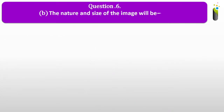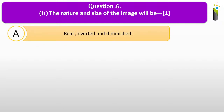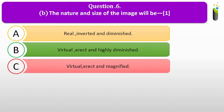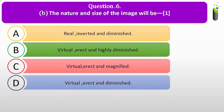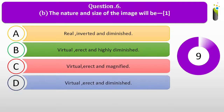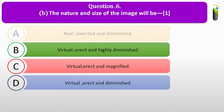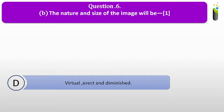Question number six B. The nature and size of the image will be dash. A, real, inverted and diminished. B, virtual, erect and highly diminished. C, virtual, erect and magnified. D, virtual, erect and diminished. The correct answer for this question is D: virtual, erect and diminished.